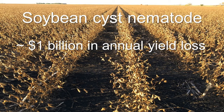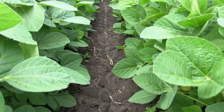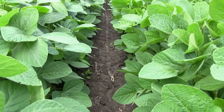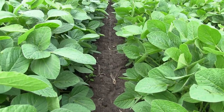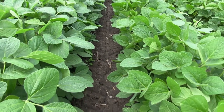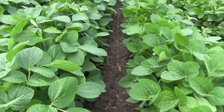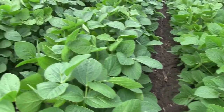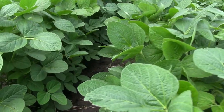Soybean cyst nematode, or SCN, is the top yield-robbing pathogen of soybean in the US. It's responsible for an estimated $1 billion in lost yield every year. SCN is also pretty sneaky in that it can cause up to 30% yield loss without any above-ground symptoms.